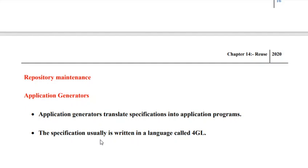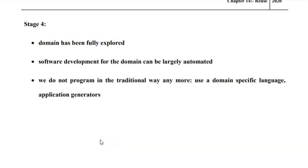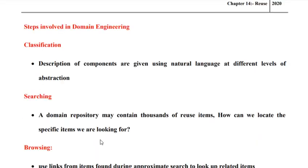Application generation — here what we tend to do is translate the specification into an application program using application generators or fourth generation languages. So these are the steps involved in domain engineering in brief: classification, searching, browsing, repository maintenance, and application generation.